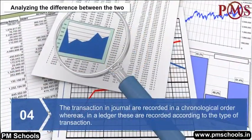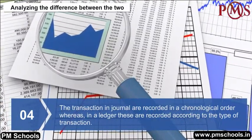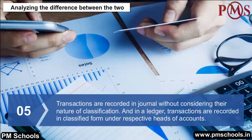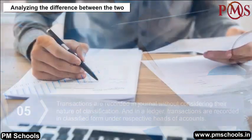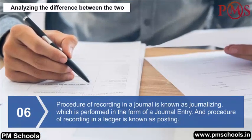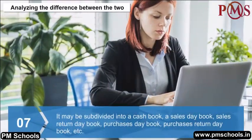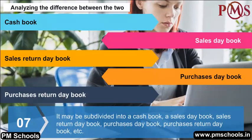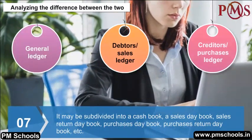Further distinctions: In a journal, transactions are recorded without considering their classification; in the ledger, transactions are recorded in classified form under respective heads of accounts. The procedure of recording in a journal is called journalizing, performed in the form of a journal entry. Journal may be subdivided into cash book, sales day book, sales return day book, purchases day book, purchases return book, etc. The ledger may be subdivided into general ledger, debtors or sales ledger, and creditors or purchases ledger.